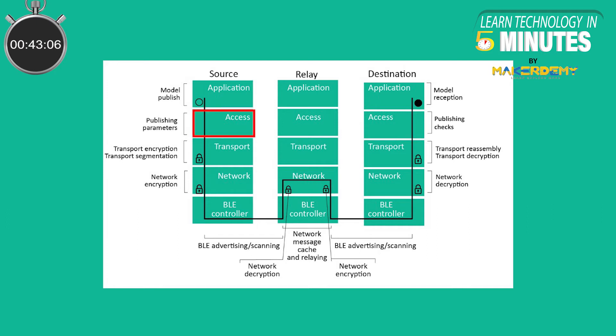The access layer fetches the necessary publish parameters like the destination address, encryption keys and time to live value and passes the packet to the transport layer, the highest of the core layers.